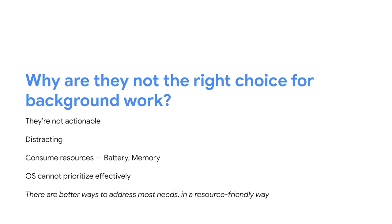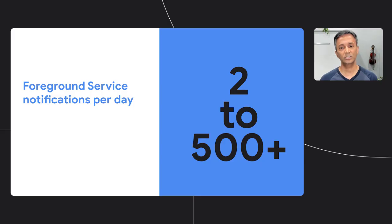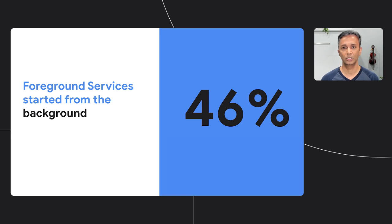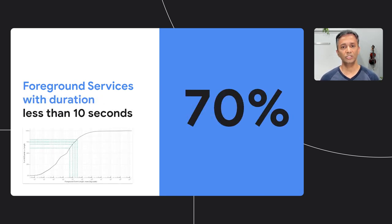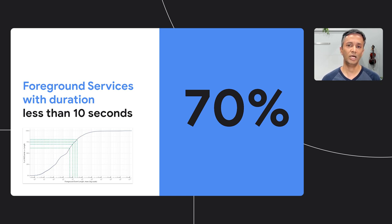Since the app decides when to start a foreground service and how long it runs, the OS can't prioritize competing tasks effectively. This could mean that what's most important to the user may not be completed in a timely manner or in the most efficient way. We've looked at foreground services in depth and found some very interesting statistics. We discovered that a user experiences anywhere between two and over 500 foreground service notifications per day. We found that almost half of foreground services are started from the background when the user isn't interacting with the app and isn't expecting the app to be active. We then measured the duration of foreground service sessions. Almost 70% of foreground services run for less than 10 seconds. Some are apps finishing up work on being backgrounded and some are happening due to a background trigger. We also noticed that most sessions are less than two minutes in duration.